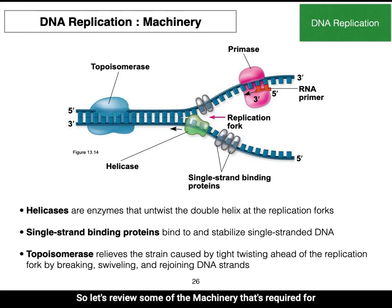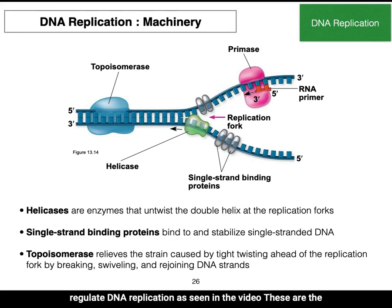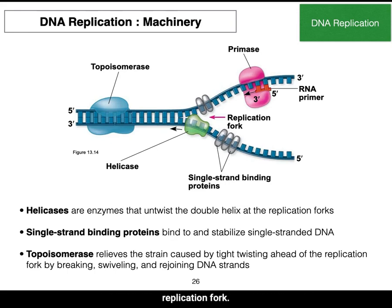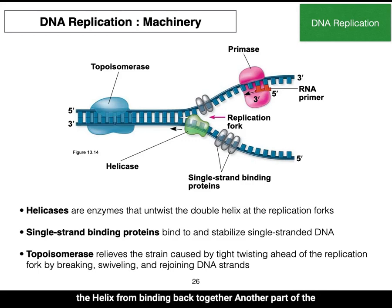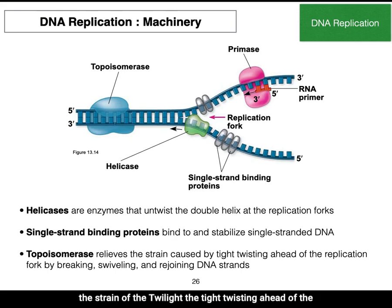Let's review some of the machinery required for DNA replication. Helicases untwist the double helix at the replication fork. Single-strand binding proteins bind to and stabilize the DNA in its single-stranded form, preventing the helix from reforming. Topoisomerase relieves the strain of tight twisting ahead of the replication fork by breaking and rejoining the DNA strands.